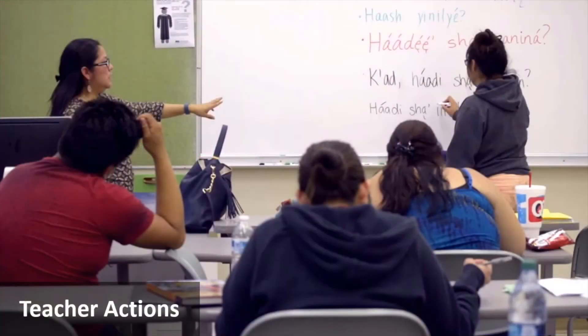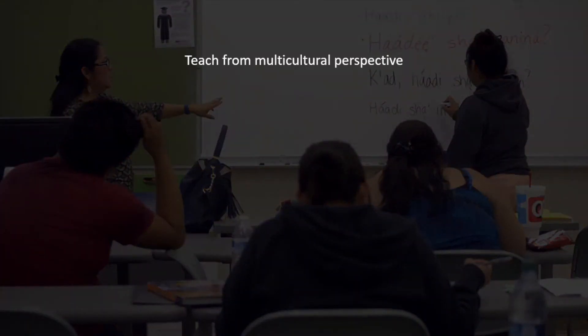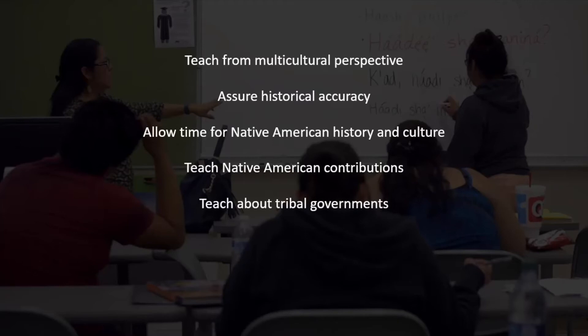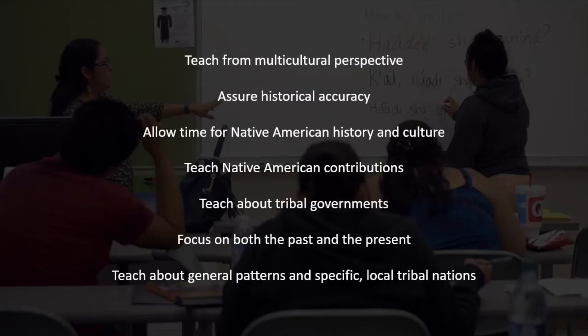Now we'll take a look at social studies. Here are some things you can do in your social studies instruction to make it more culturally responsive to native students: teach from a multicultural perspective to include authors and worldviews from different cultures; assure historical accuracy of events related to native peoples; allow time for Native American history and culture; teach Native American contributions; teach about tribal governments; focus on both the past and the present; and teach about general history and culture related to native peoples and the attributes of specific local tribal nations, including their history and contemporary contexts.